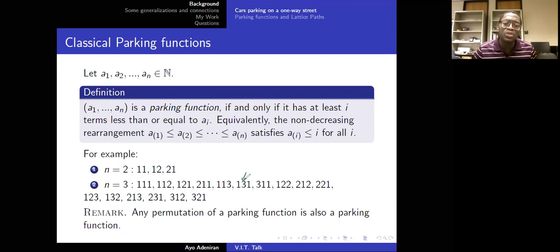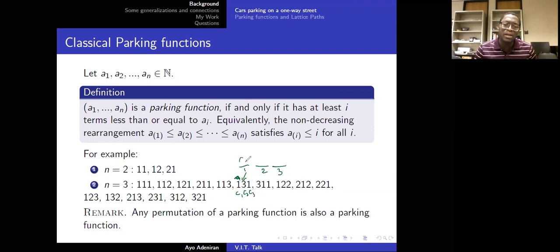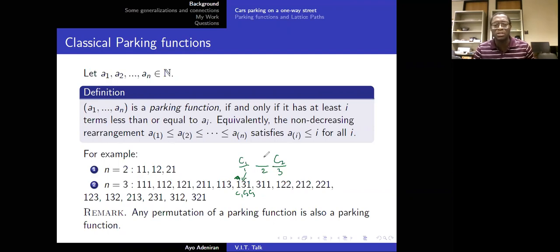Let's try to park using preference sequence 1, 3, 1. We have a street with three spots. Car 1 has preference 1, car 2 has preference 3, car 3 has preference 1. Car 1 parks at spot 1 because it's open. Car 2 wants spot 3, so it parks there. Car 3 wants spot 1, which is occupied, so it moves forward by one spot and parks at spot 2. So we say this is a parking function.